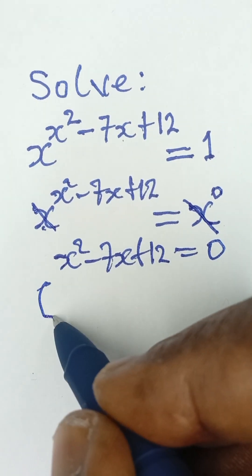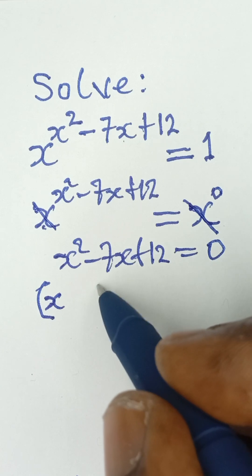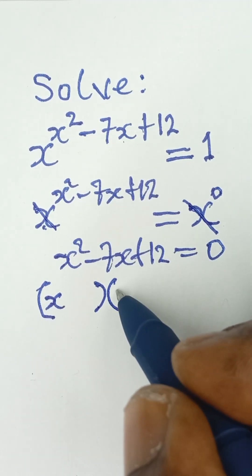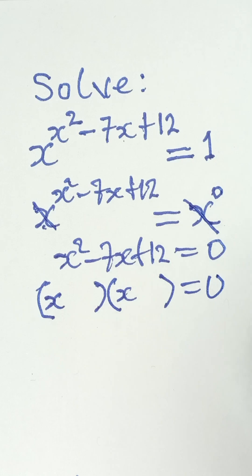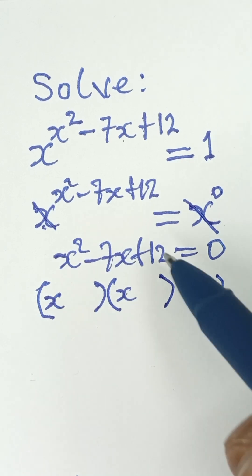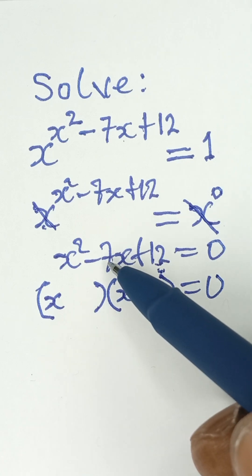Now, this is a quadratic equation. A simple way to factor this is to open up brackets and put x and equate it to 0. Now, what we need to do here is to look for two numbers that their product is 12 and their sum is negative 7.